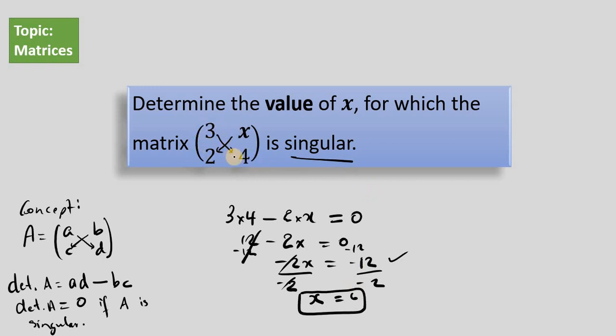That will make this matrix singular. Let's check now. So if we have the matrix 3, and where x is 6, we have 2, 4. If we were to work out the determinant of this matrix, we should get 0. Let's try.